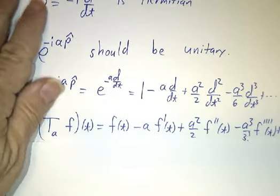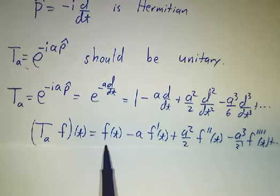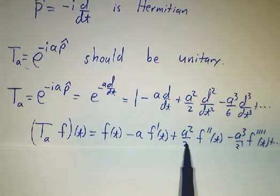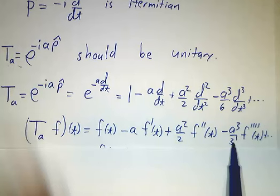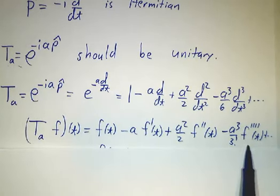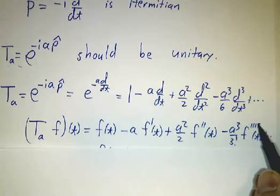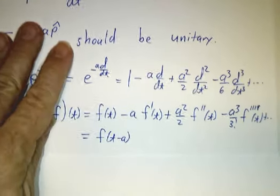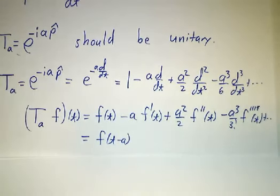And if we apply that to an arbitrary function, you get f of t minus a f prime of t, plus a squared over 2 f double prime, minus a cubed over 6 f triple prime, and so on. And that's exactly the Taylor series for f of t minus a.